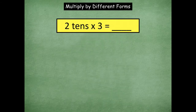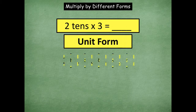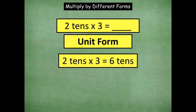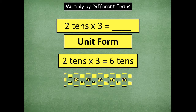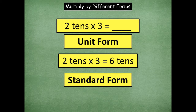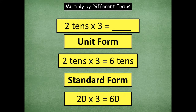So here we go — two tens times three. This is similar to what we just did, but now the units are in tens. The unit form is two tens times three equals six tens. You're really just doing two times three, but in the tens unit. So in standard form, two tens is 20, so 20 times three equals 60.